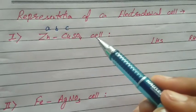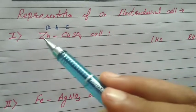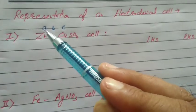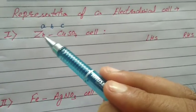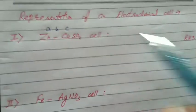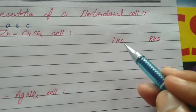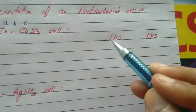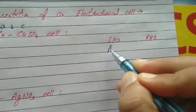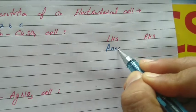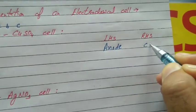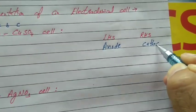To represent the cell, students, remember A, B, C. There is the anode part, there is the salt bridge, and there is the cathode part. Left-hand side is anode — because A comes first alphabetically — and right-hand side is cathode.